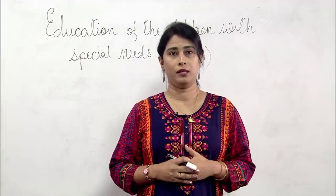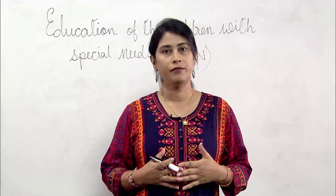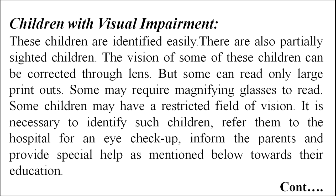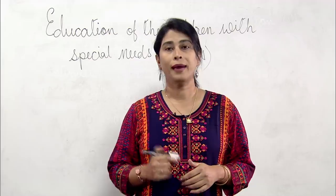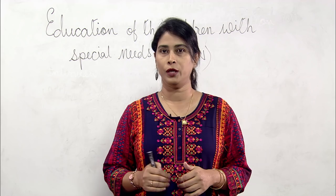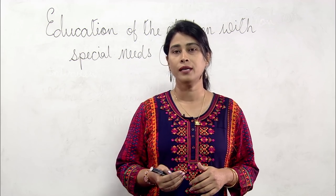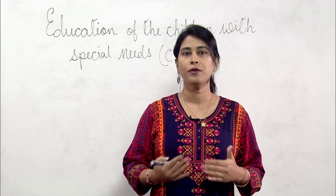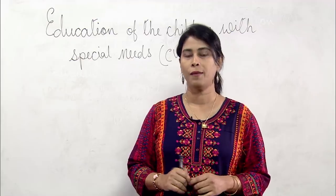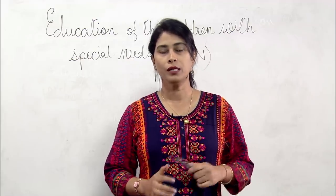Children with visual impairment are identified very easily; these are also partially sighted children. The vision of some can be corrected through lens, but some can read only large printouts, and some may require magnifying glasses or have a restricted field of vision. It is necessary to identify such children, refer them to the hospital for an eye checkup, inform the parents, and provide special help towards their education.